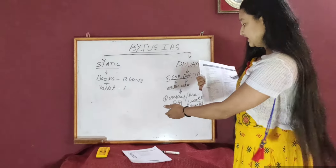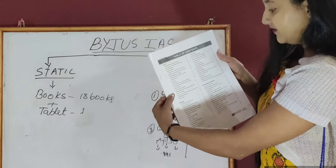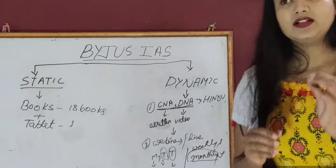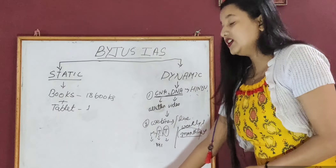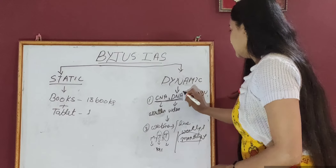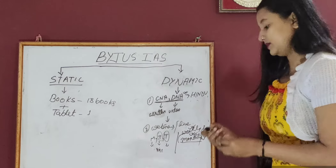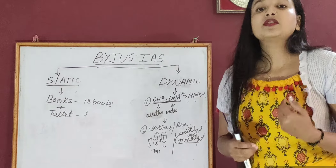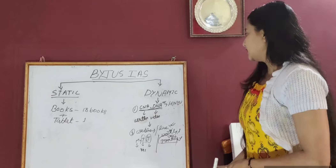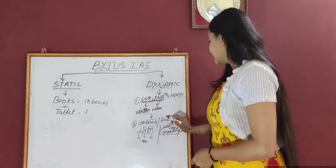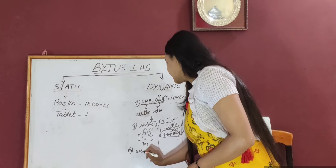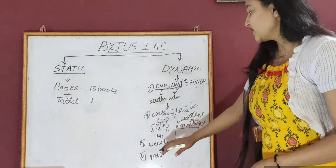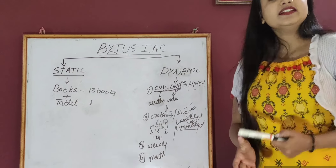In the weekly and monthly webinar parts, every different subject is covered — topics under Polity, Economy, and so on. Every news item relevant to UPSC is covered first on a daily basis, then weekly webinars, then monthly webinars. This means you're covering it more than three times, which helps with revision and prepares you for Mains-type answers. Under the dynamic section we have CNA, DNA, webinars, live classes, weekly magazine, and monthly magazine — all updated regularly.